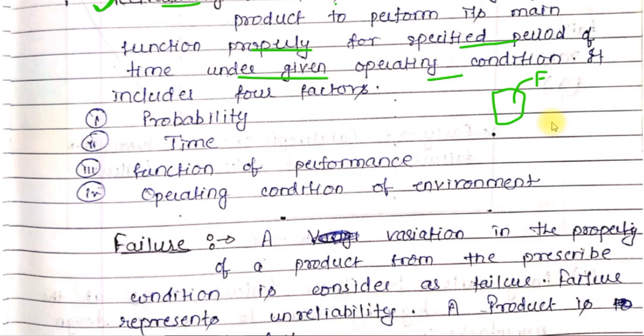Reliability of any product depends on four factors: (a) Probability, (b) Time, (c) Function of performance - how the product performs, and (d) Operating condition of the environment. For example, there are many products that need to be kept at high temperatures or in the fridge.